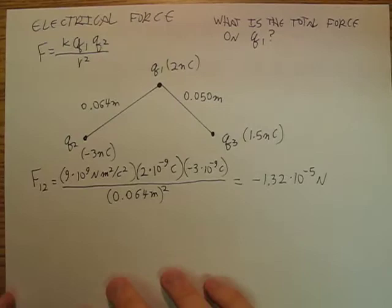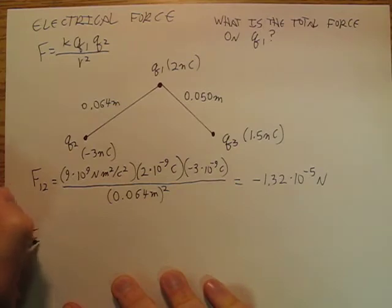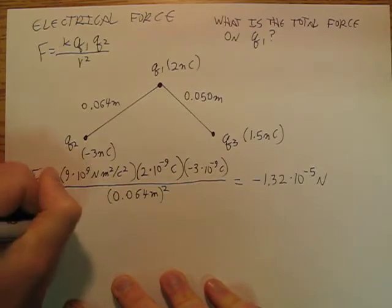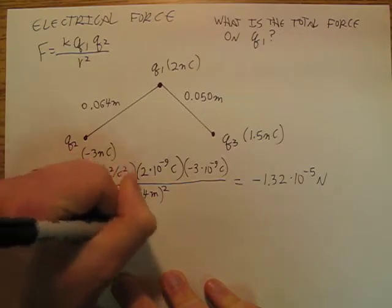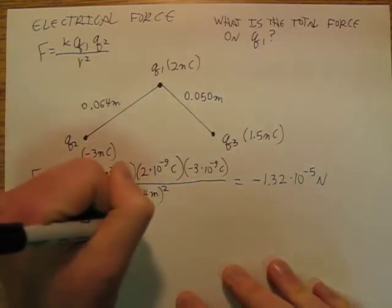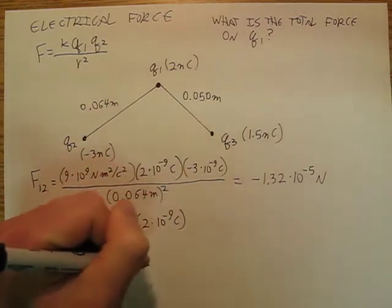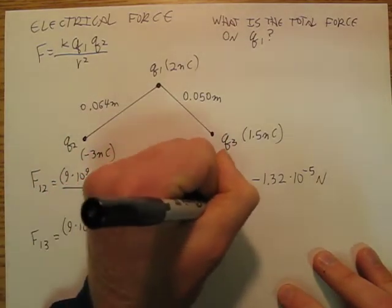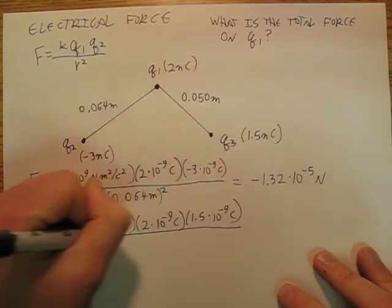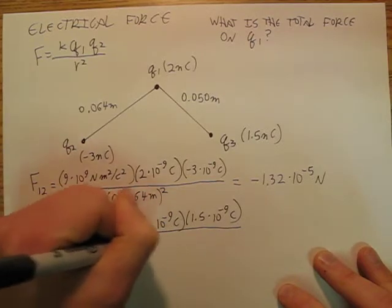And then so that's one force. Then I've got F13 is going to be 9 times 10 to the 9th newton meter squared per coulomb squared. Q1 stays the same, 2 times 10 to the negative 9th coulombs. But now Q3 is going to be 1.5 times 10 to the negative 9th coulombs, and we divide that by 0.05 meters squared.